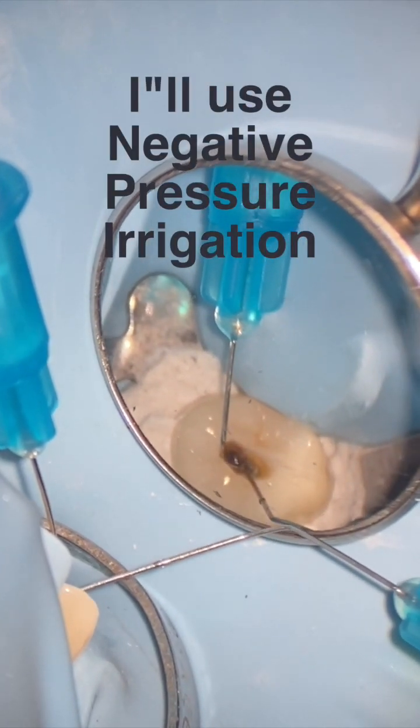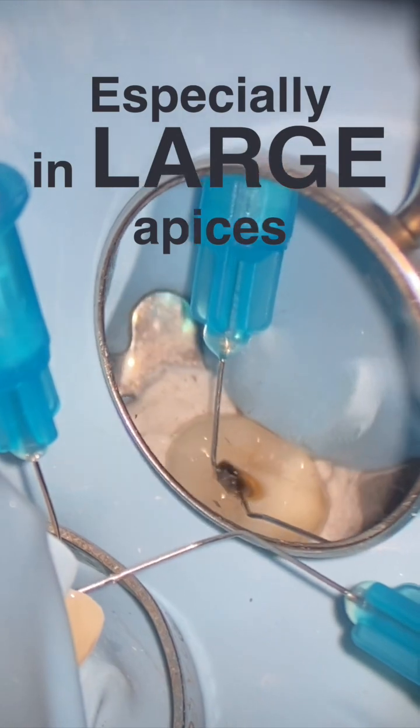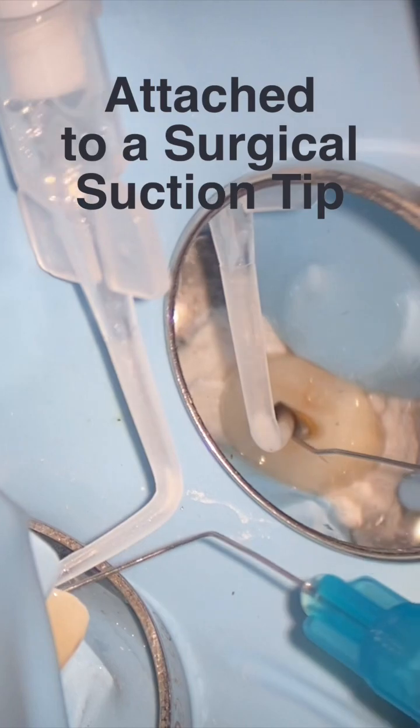So I'll use negative pressure technique to circumvent that issue, and it's pretty simple. I'm just going to use a BC sealer tip or an irrigating tip attached to my dental system suction.